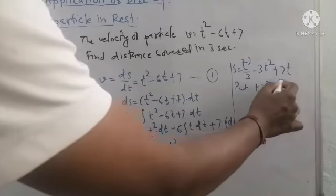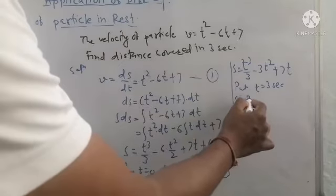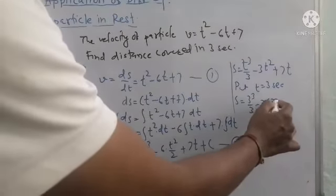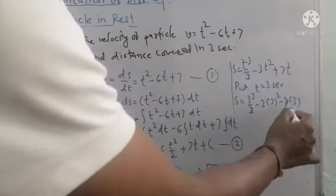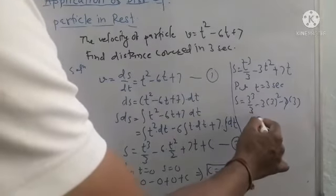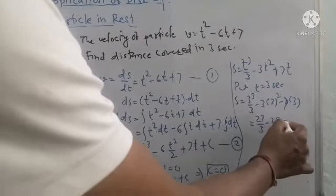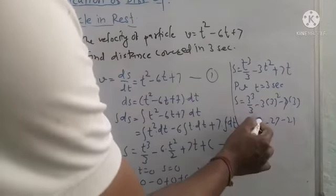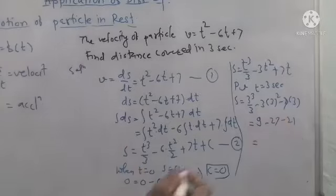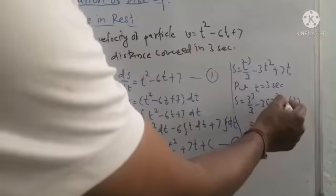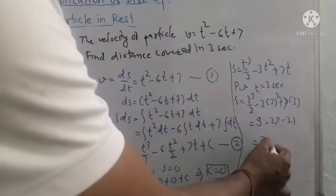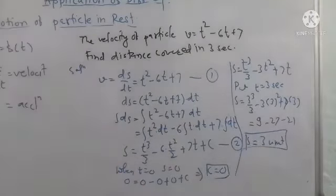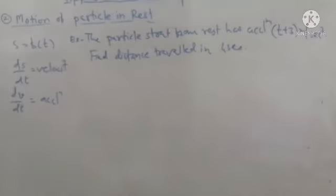We are asked for displacement at t = 3 seconds. Substituting t = 3: s = 3 cubed by 3 minus 3 times 3 squared plus 7 times 3 = 27 by 3 minus 27 plus 21 = 9 minus 27 plus 21 = 3 units. So the displacement of the particle up to 3 seconds is 3 units.